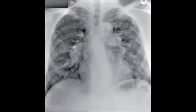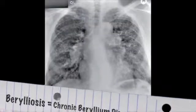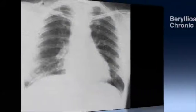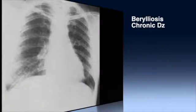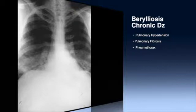Chronic beryllium disease, also called berylliosis, is more common than acute beryllium disease. The disease can progress to pulmonary hypertension, fibrosis, pneumothorax, and the development of non-caseating granulomas.